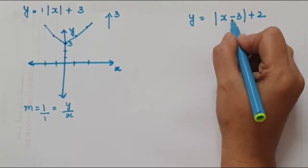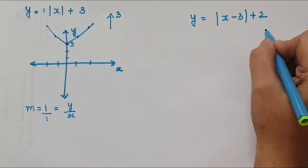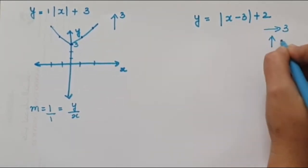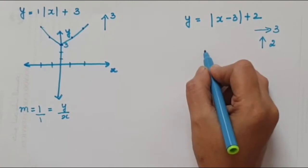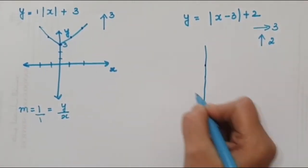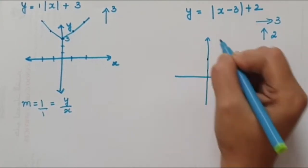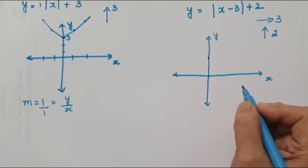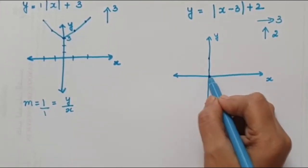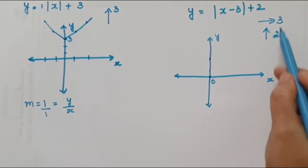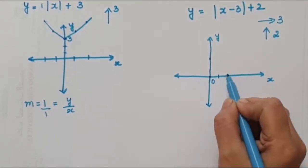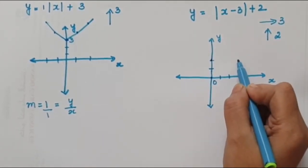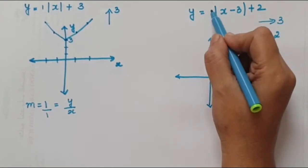Since it is x - 3, it moves 3 blocks to the right, and the +2 outside means it moves 2 blocks upward. So to draw this graph, starting from the origin, we move 3 blocks to the right and 2 blocks up — that gives us the vertex point.